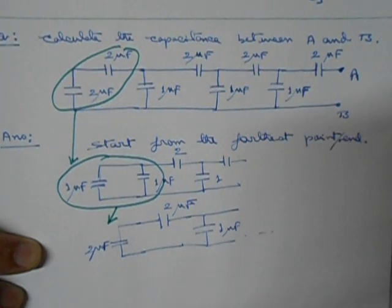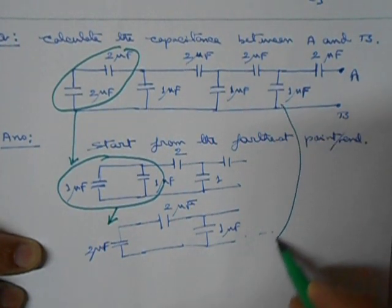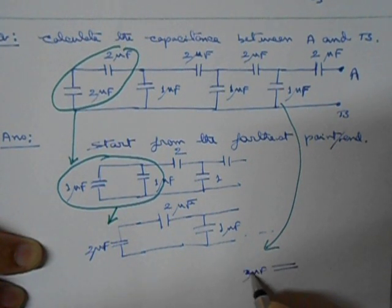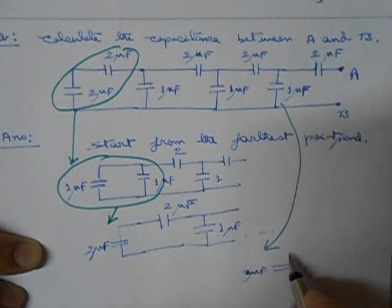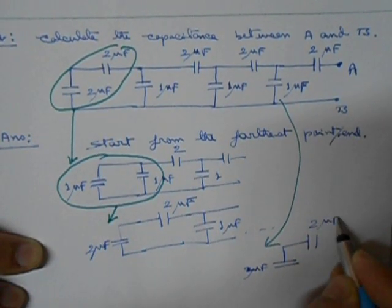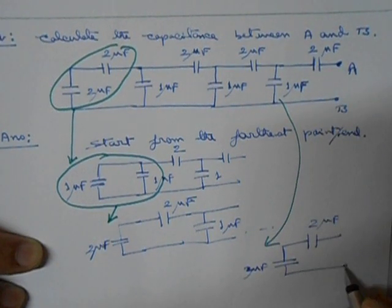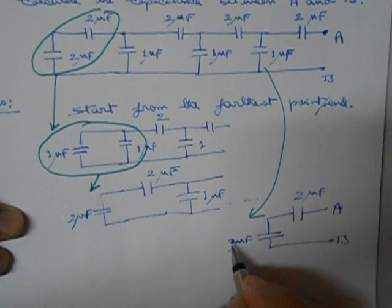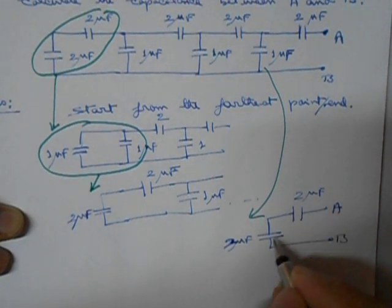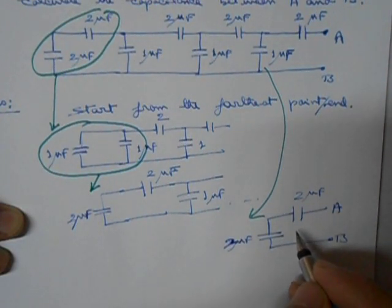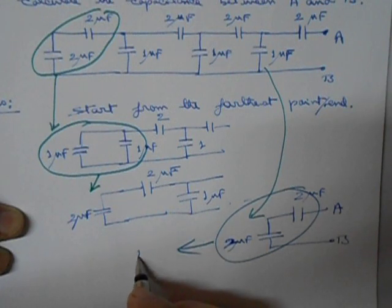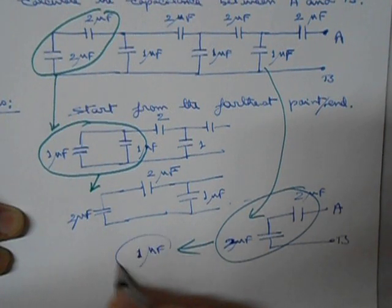Proceeding in this way, at this point we will get a two microfarad capacitor, and this will be connected to another two microfarad here — this is point B and this is point A. So we have come to the situation where this two microfarad and this two microfarad are in series. Their equivalent capacitance is one microfarad. So the final answer is one microfarad.